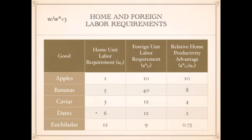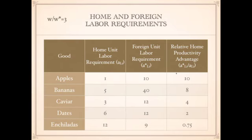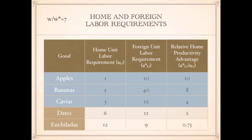Let's do that one more time with a wage ratio of 3 — wages are 3 times higher in the home country than the foreign country. If the relative home productivity advantage is greater than the wage rate ratio, it will be produced at home. 10 is greater than 3, so apples are produced at home. 8 is greater than 3, so bananas are produced at home. Caviar's relative advantage of 4 is also greater than 3, so caviar is produced at home. Dates and enchiladas will be produced in the foreign country.